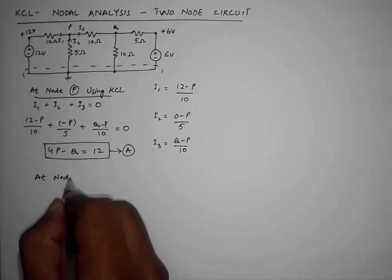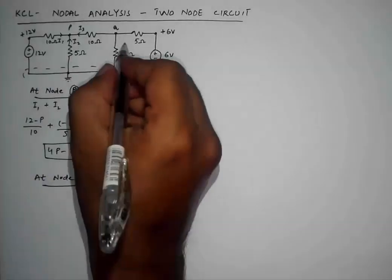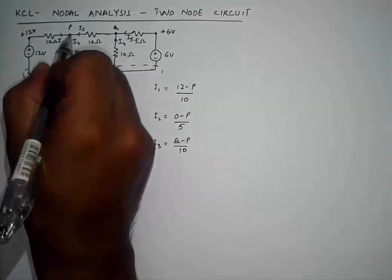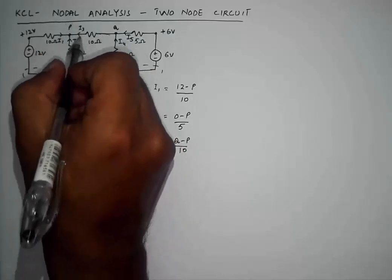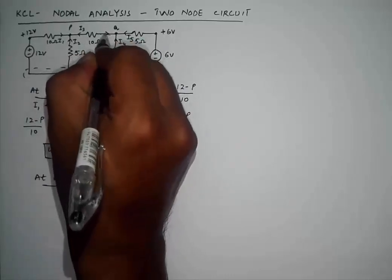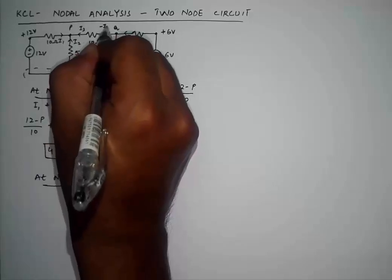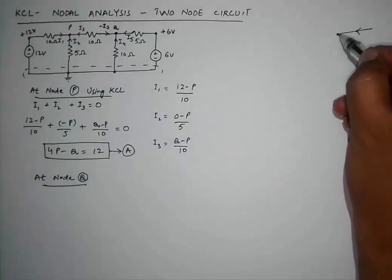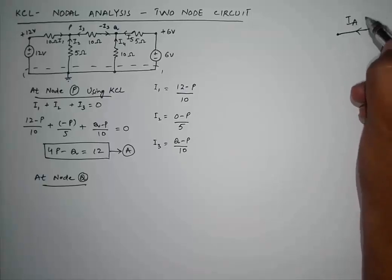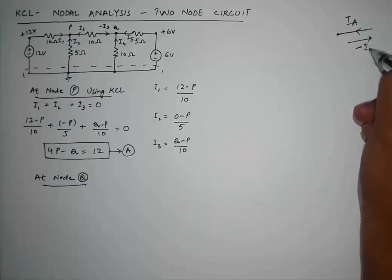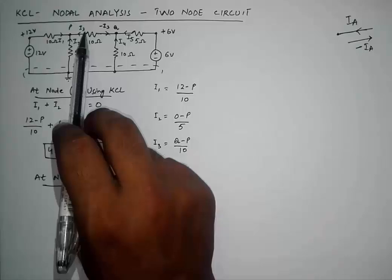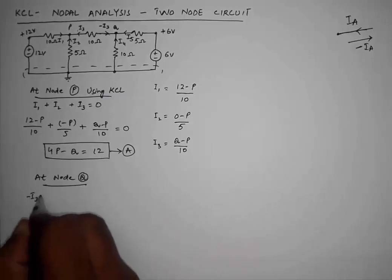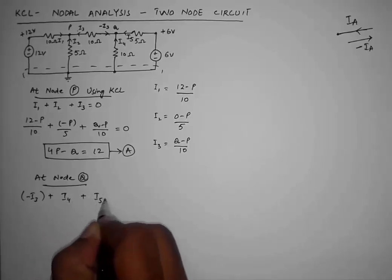Next, we apply the same procedure at node Q. The currents at node Q are I4 and I5. I have not placed a new current in the branch between P and Q because I3 is already assigned to that branch. Since I3 was assumed flowing into P, it flows out of Q, so the contribution at node Q is −I3. Therefore: −I3 + I4 + I5 = 0.